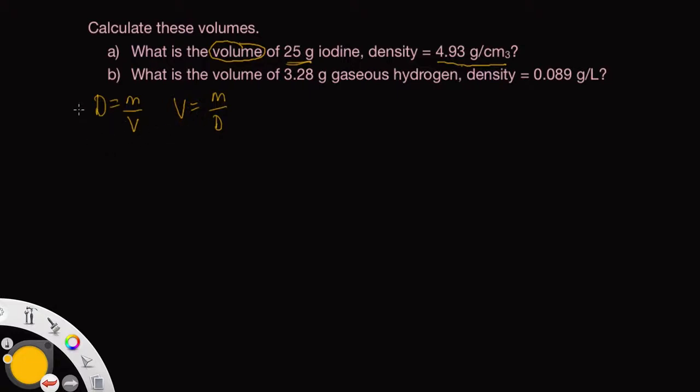Instead, what I would like you to think about is using density as a conversion factor. So we have the density, which is equal to 4.93 grams per 1 cubic centimeter. And remember, a conversion factor is when two equivalent quantities are written one over another in a fraction. So this is the same thing as writing 1 cubic centimeter over 4.93 grams.